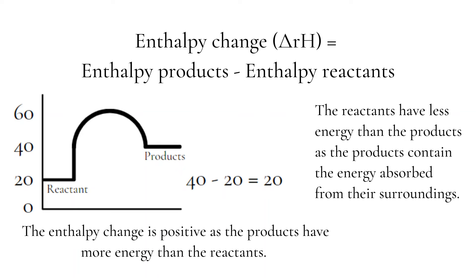The products have 40 kJ of energy, and the reactants have 20. So if we go energy of products, 40, minus the energy of the reactants, 20, we see that the enthalpy change is 20. For an endothermic reaction, the enthalpy change is always positive, as the products have more energy than the reactants.